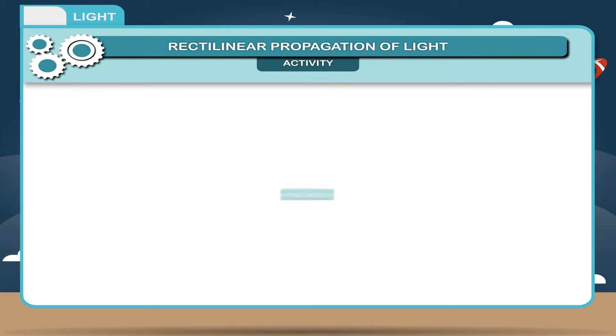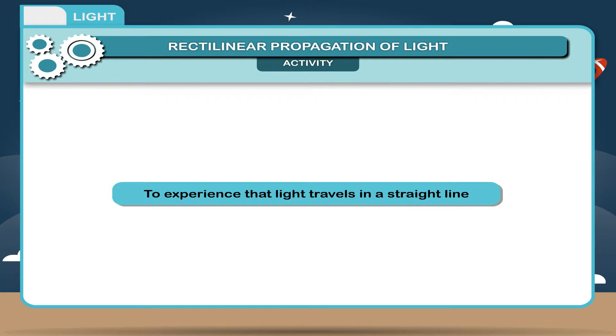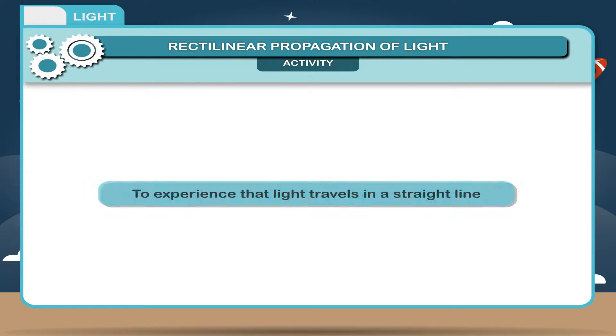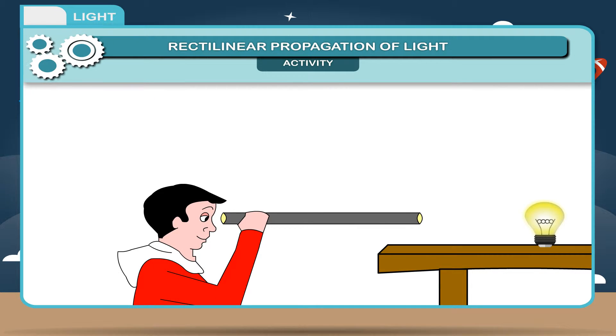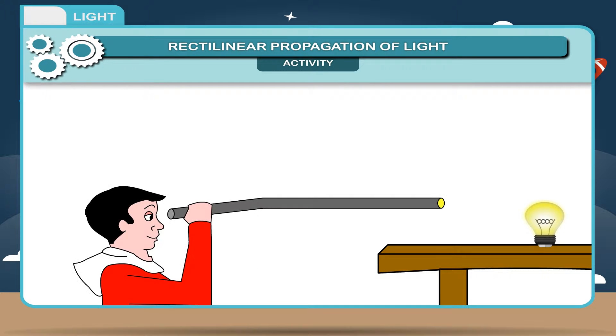Activity. To experience that light travels in a straight line, take a piece of rubber pipe. Look at a distant small source of light through the pipe. Now, bend the pipe gently and try to see the same source of light again through the pipe. This time, you will not be able to see the source of light. Thus, it can be concluded that light travels in a straight line.